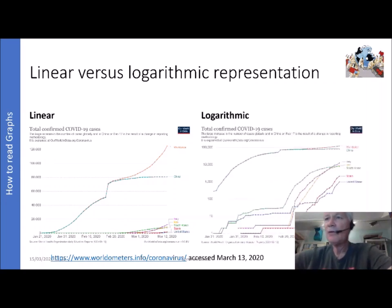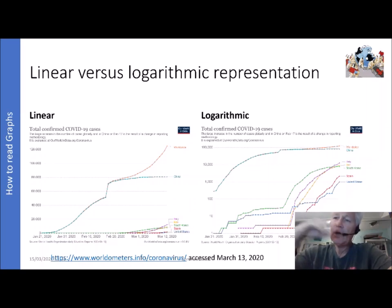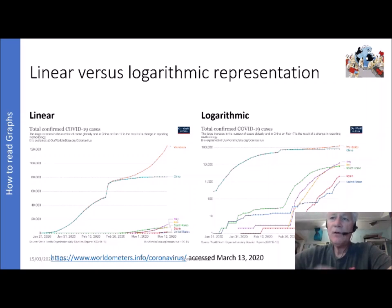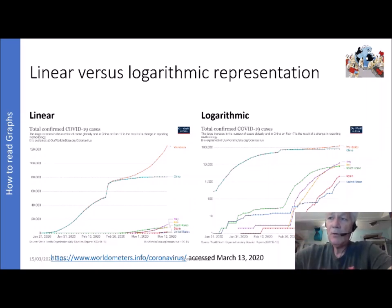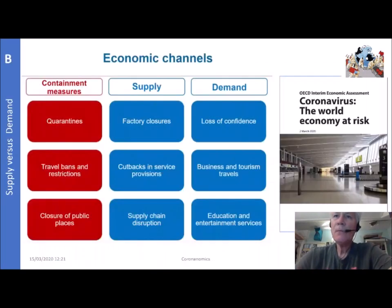On the linear scale, other countries appear to show not much happening at the bottom, because the large China and world numbers compress what you can see. If you take a logarithmic scale, each step between horizontal lines is ten times bigger than the previous — from 1 to 10, then 10 to 100, then 100 to 1000, and so on. This gives compression at the top but allows you to see what is happening at the bottom, where the dynamics are also important. So far for the curves.